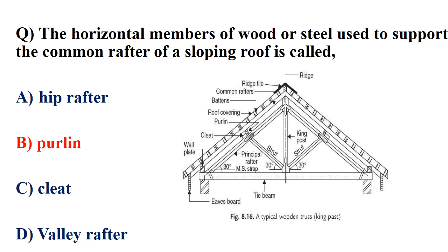This is a horizontal member supporting the common rafter. This is a batten used for roof coverings. This is the common rafter.